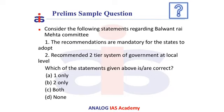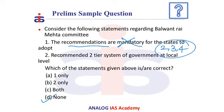Now let us solve this question. Consider the following statements regarding the Balwantrai Mehta Committee: Statement 1 — the recommendations are mandatory for the states to adopt. Statement 2 — it recommended a two-tier system of government at the local level. The correct answer is D — None. As we discussed, the recommendations are only advisory in nature and not mandatory for the states to adopt. Hence states have adopted two-tier, three-tier, and sometimes four-tier systems. And it did not recommend a two-tier system; rather it recommended a three-tier system — the village Panchayat, Panchayat Samiti, and Zilla Parishat. Therefore, the correct answer is D — None.